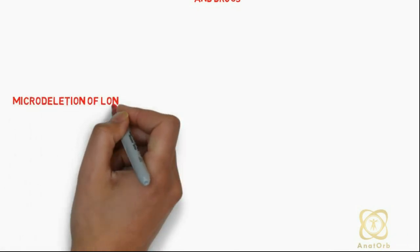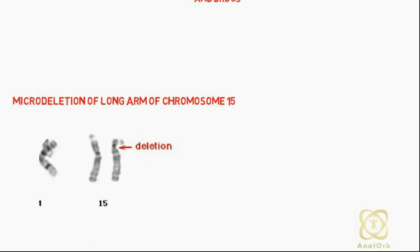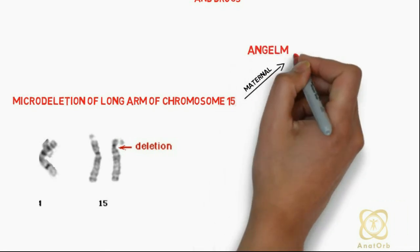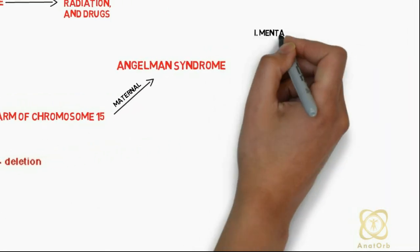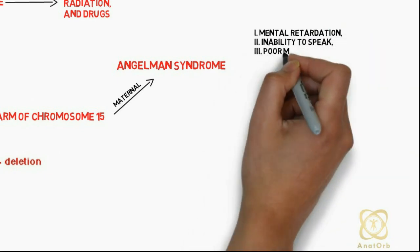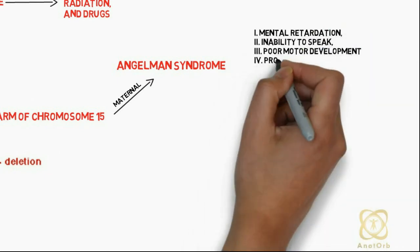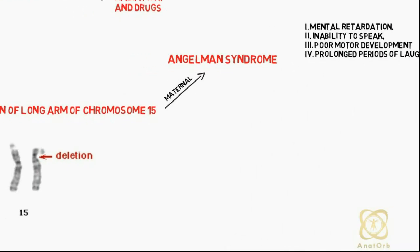An example of a structural abnormality is microdeletion of the long arm of chromosome 15. Inheriting the deletion on the maternal chromosome results in Angelman syndrome, which is characterized by mental retardation, inability to speak, poor motor development, and prolonged periods of laughter.